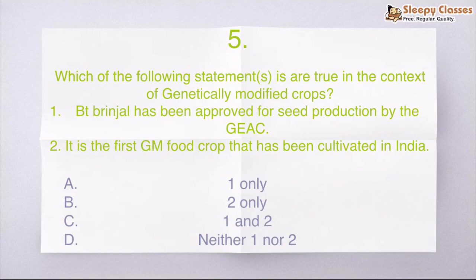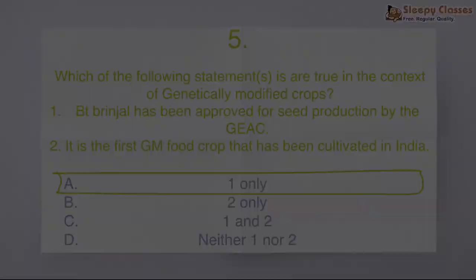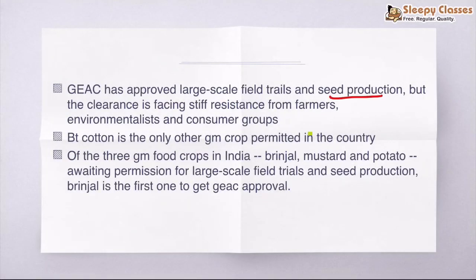Which of the following statements are true in the context of genetically modified crops? First statement: Bt Brinjal is approved for seed production by the GEAC, which is the Genetic Engineering Appraisal Committee. And second statement: It is the first GM food crop cultivated in India. So you can pause.